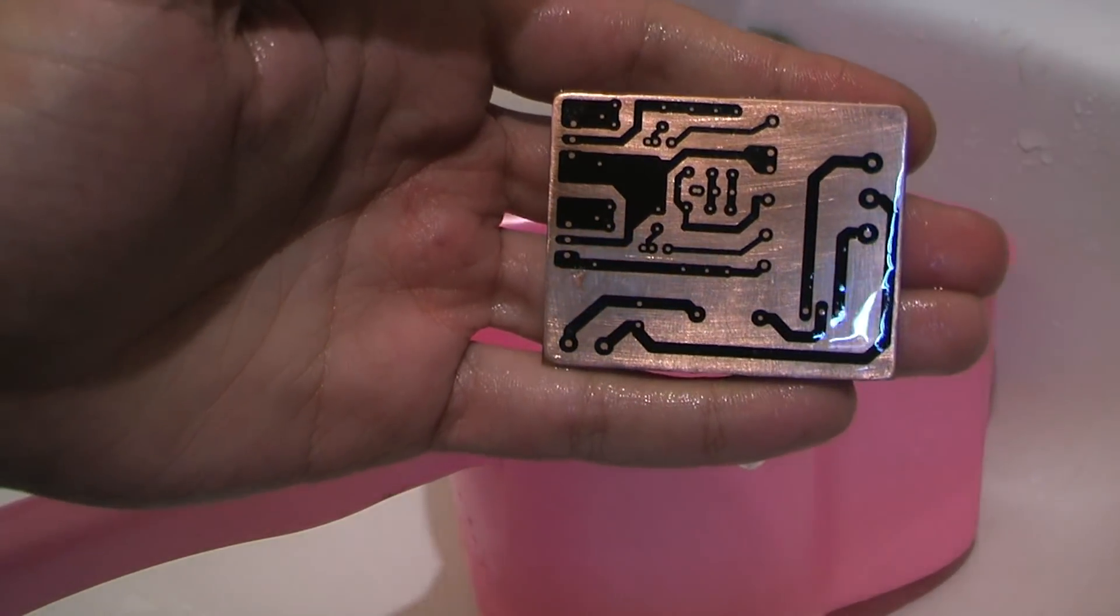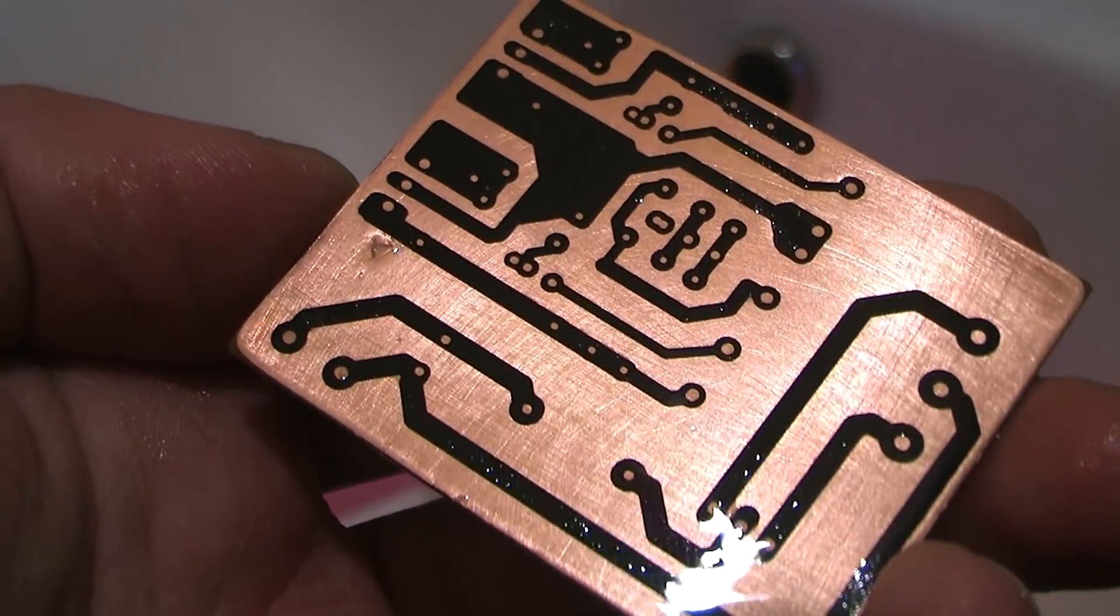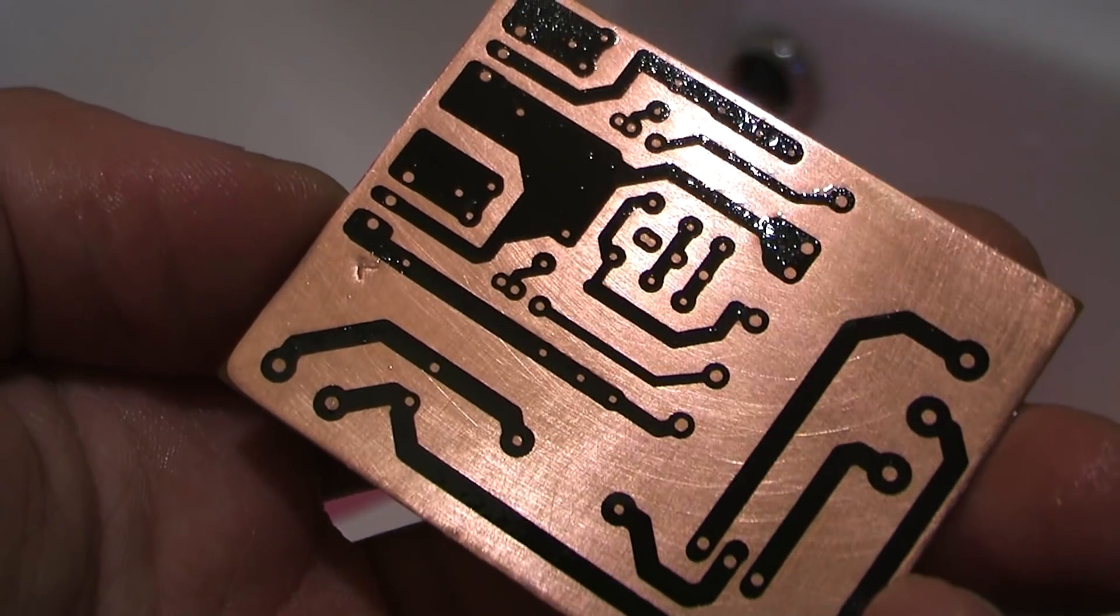The board is ready to be etched. But before that, we need to carefully inspect it for defects. If there are ragged tracks, withdraw them, for example with nail polish.